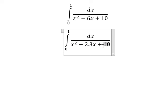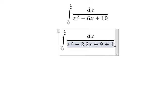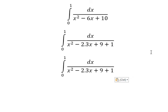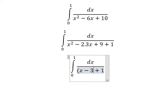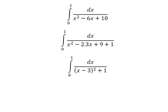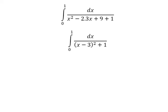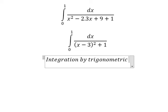We need to have 9 plus 1 because I want to create an identity in here. We have (x minus 3) to the power of 2, so we need to use integration by trigonometric substitution.